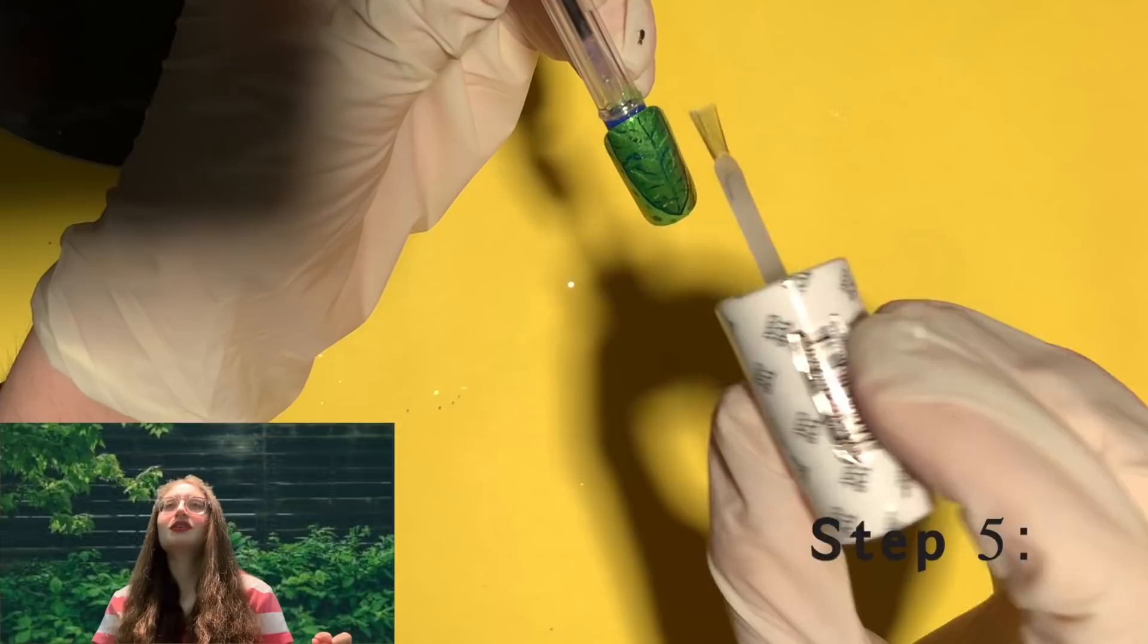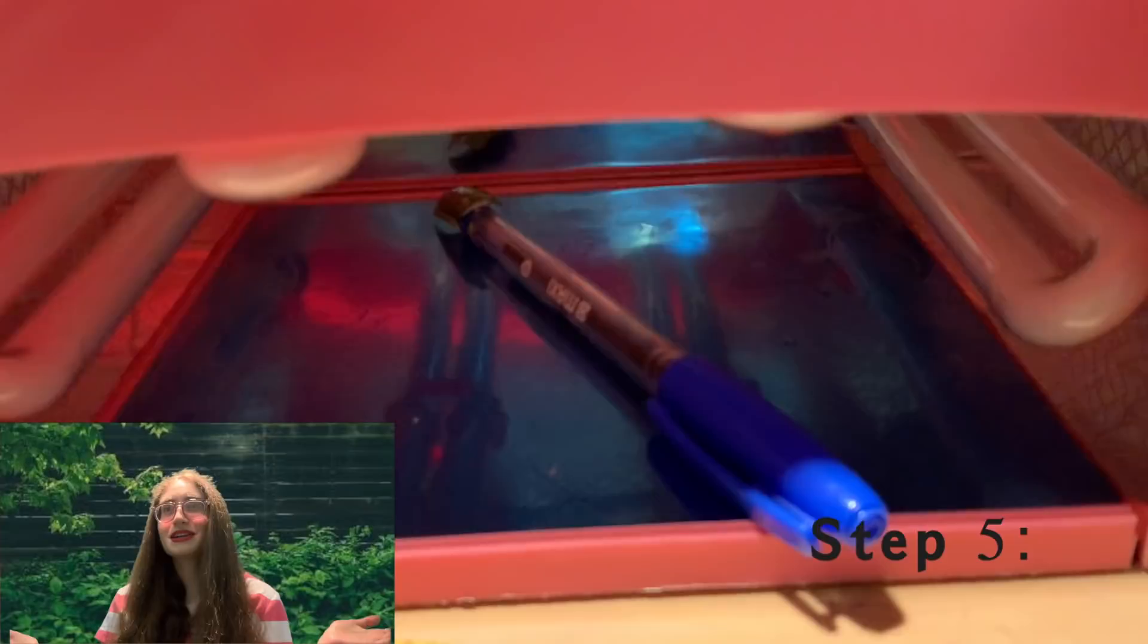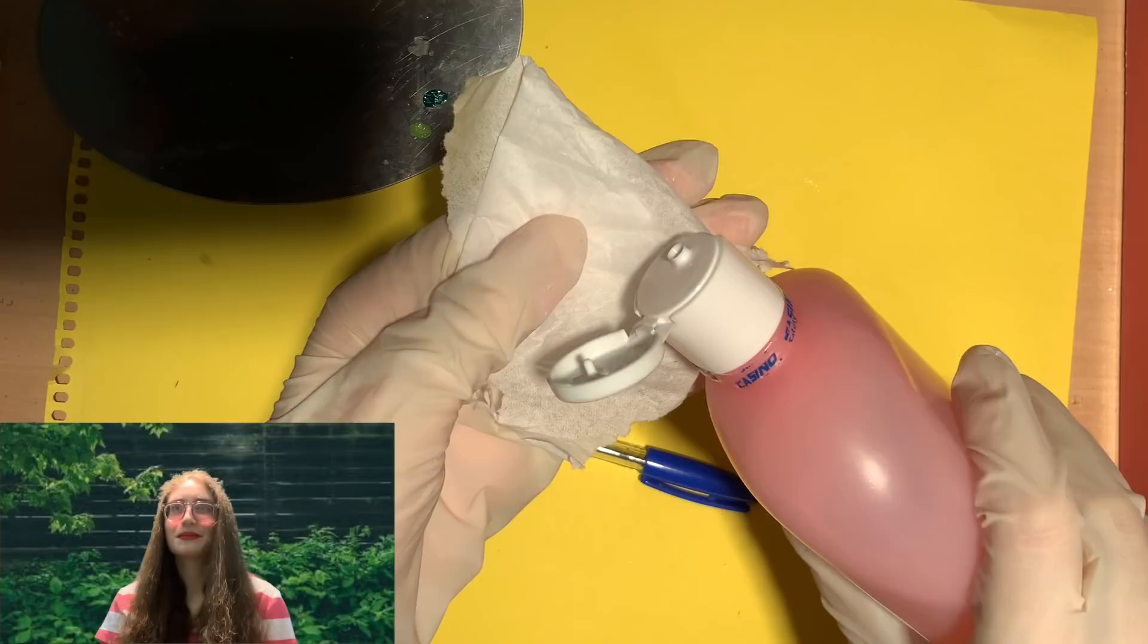Step five, put a really thin layer of gel top coat and cure in a UV lamp for 30 seconds or however long it says on the bottle. If you don't have a gel top coat or a UV lamp, don't worry because you can use a regular top coat. The gel top coat will just make it more glossy looking.